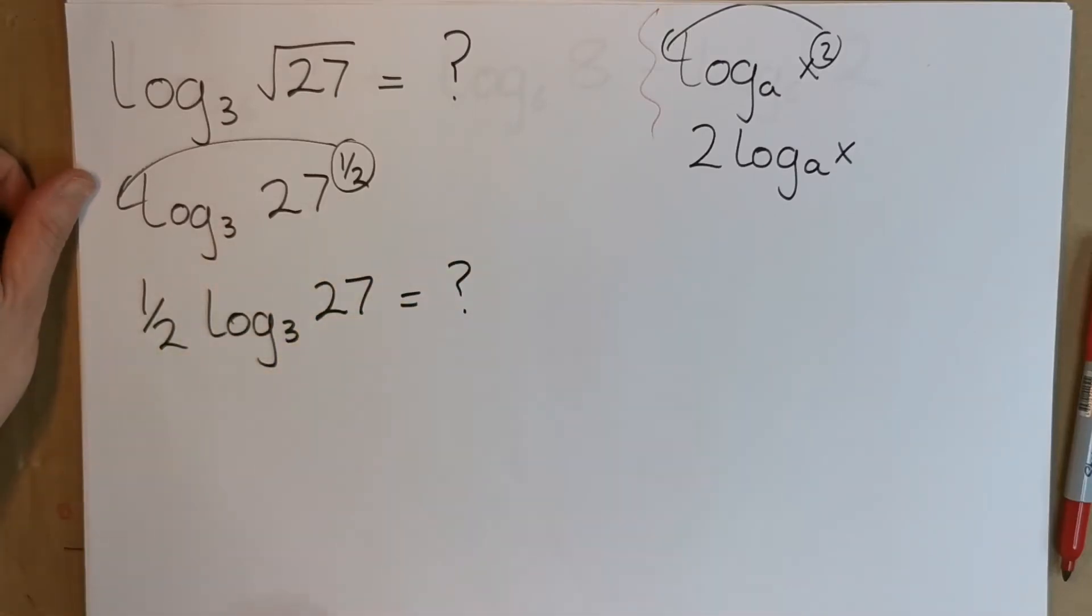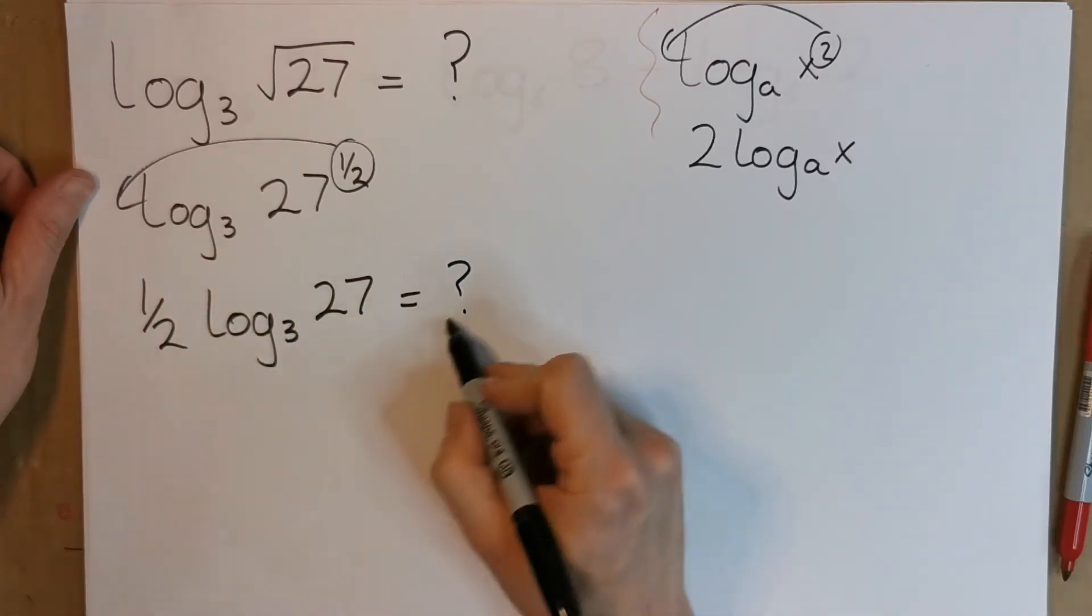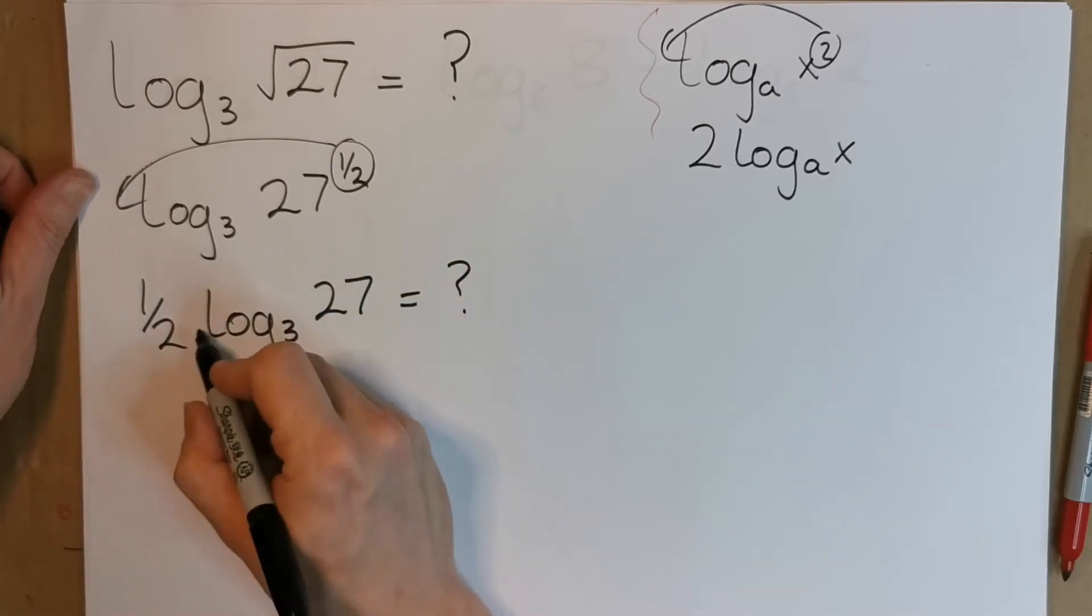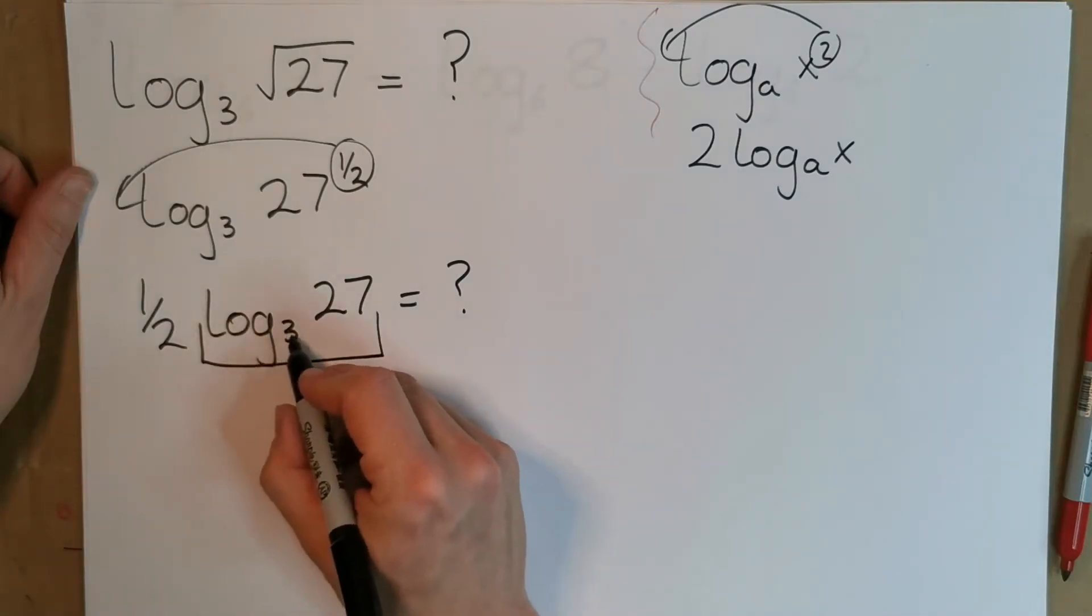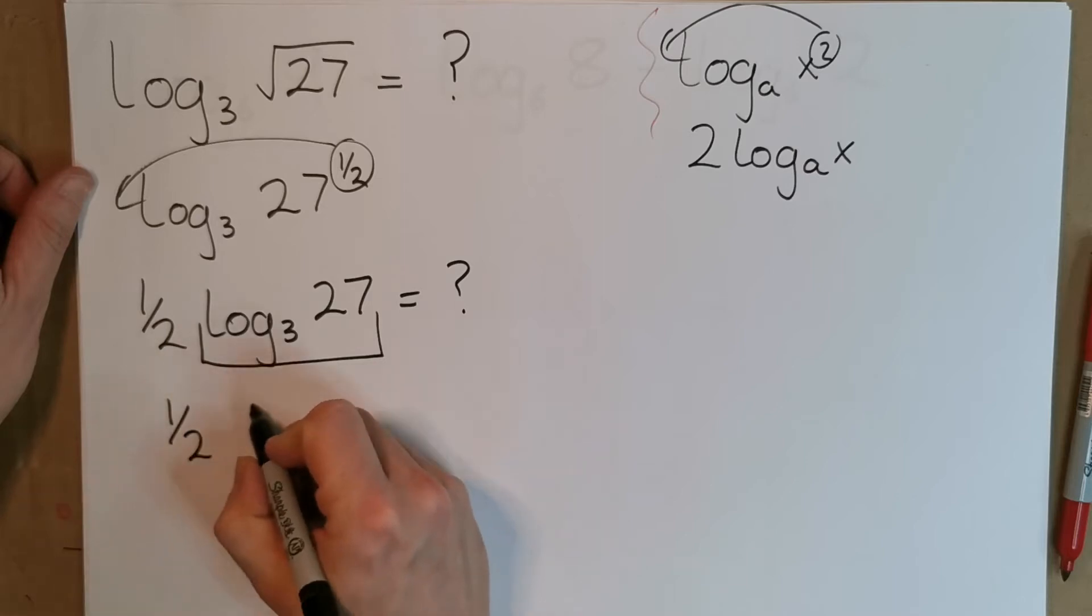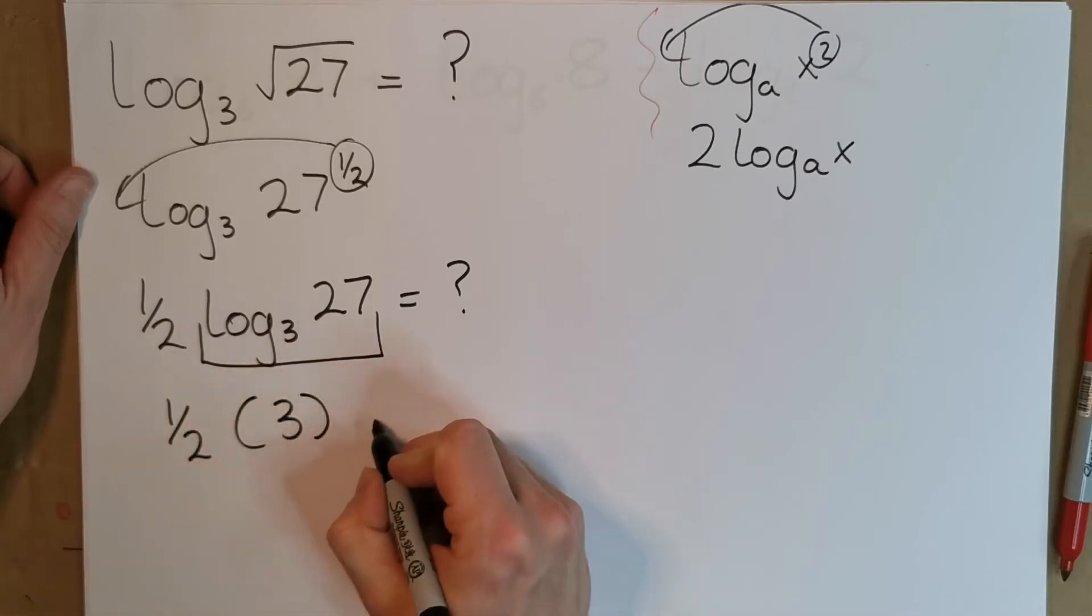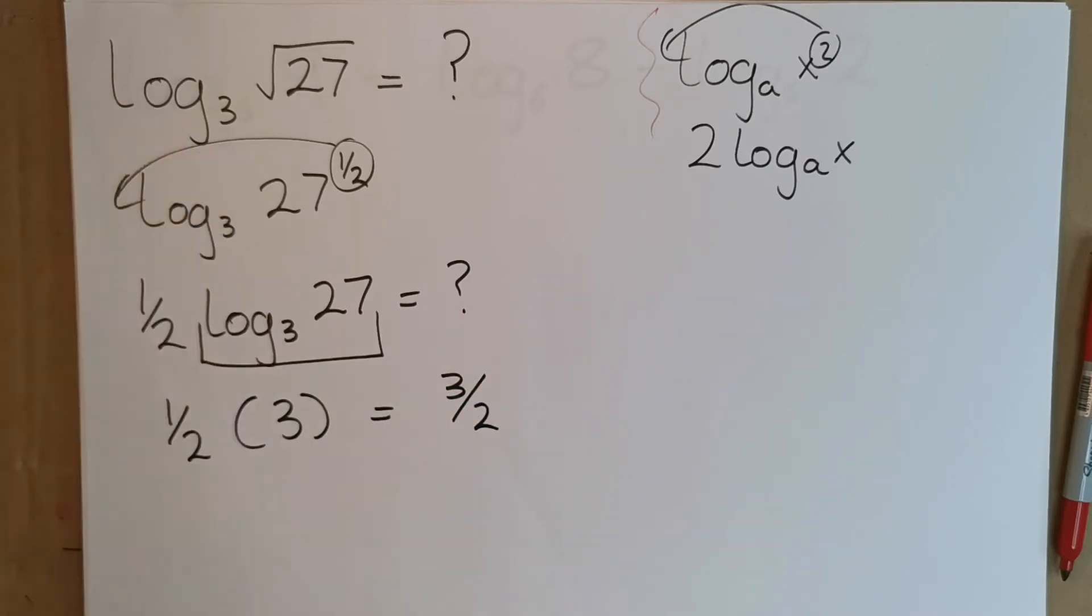Now let's look at log base 3 of 27. 3 to the power of something gives you 27. We know 3 to the power of 3 gives us 27, so log to the base 3 of 27 is actually 3. Keeping our half outside, changing this to 3, what's a half of 3? That's just 3 over 2. That's the first one done.